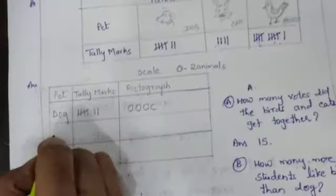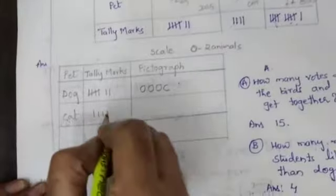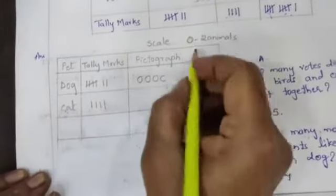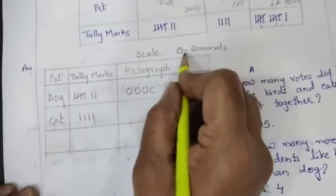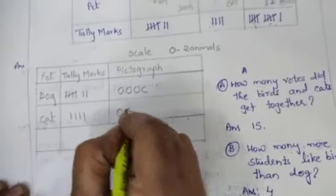Now next cat. For cat, how many? 1, 2, 3, 4 lines. So how many circles will you draw children? Each circle is 2 animals. So 2 circles.